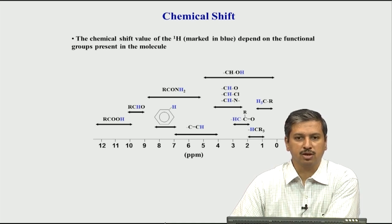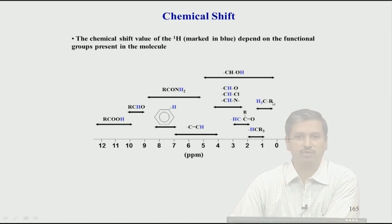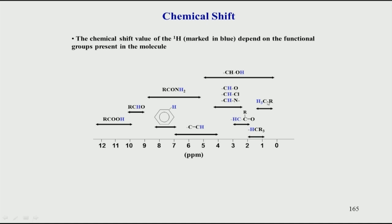When you analyze the data, you can get a fair idea of the structure. For example, methyl protons always come between 0 to 2 ppm unless they are attached to an electronegative atom. If they are in an aliphatic part, such as R-CH2-CH3, this CH3 group will almost always come between 0 to 2 ppm. Methyl groups are very easy to find in an NMR spectrum because they produce very strong peaks — singlets or multiplets — with very high peak area due to 3 equivalent hydrogens.